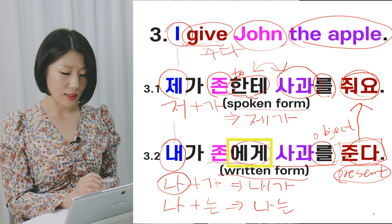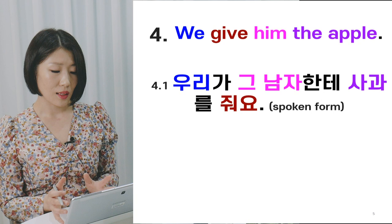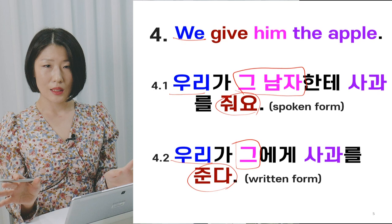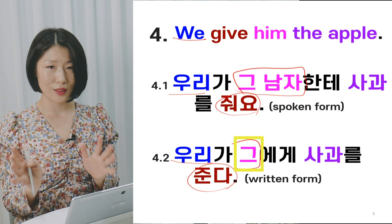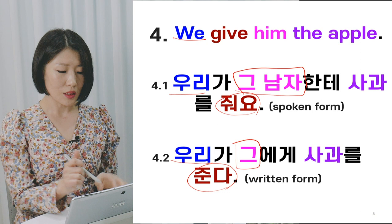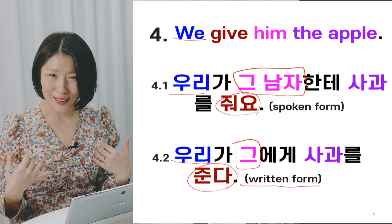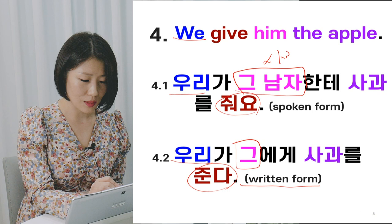Next: 'We give him the apple.' Spoken: 우리가 그 남자한테 사과를 줘요. Written: 우리가 그에게 사과를 준다. For 'him,' we translate it as 그, but you have to keep in mind — we don't use 그 in conversation. No one says 그 in a conversation because it is only for written form. You can see 그 in a book title or diary, but in daily conversation we say 그 남자 (that man) or 그 사람 (that person).